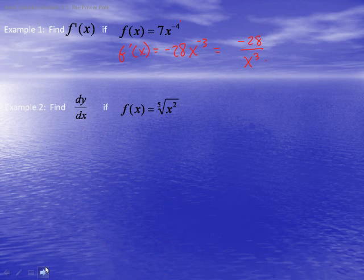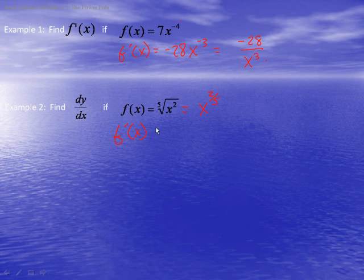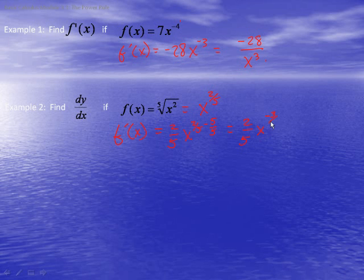In Example 2, we are going to find the derivative of y in terms of x, given that f(x) equals the 5th root of x squared, which is the same as x^(2/5). We rewrite it to use the power rule, giving f'(x), or dy/dx, equal to (2/5) times x^(2/5 - 1), which is x^(-3/5). So that gives us (2/5)x^(-3/5), and fixing the negative exponent gives 2 / (5x^(3/5)). We have found the derivative for Example 2.